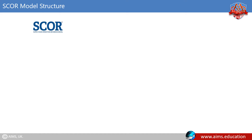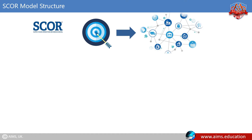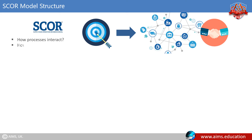SCOR is a reference model whose purpose is to describe the process architecture in a way that makes sense to key business partners. The architecture describes how processes interact, how they perform, how they are configured, and the skills of the staff operating the processes.